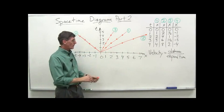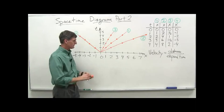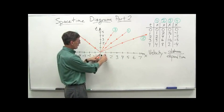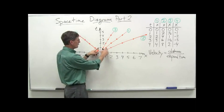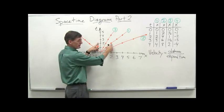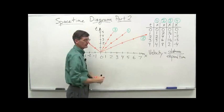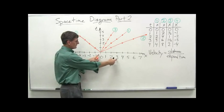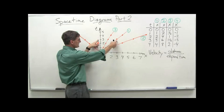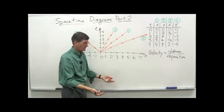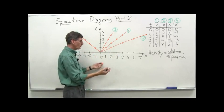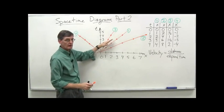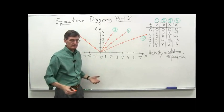How does that relate to our world lines? For run number one: we went one meter in one second, two meters in two seconds, three meters in three seconds, four meters in four seconds — clearly going one meter per second. If we take x equals three in three seconds, three divided by three is one meter per second. Because it's a straight line, that's a constant velocity situation.